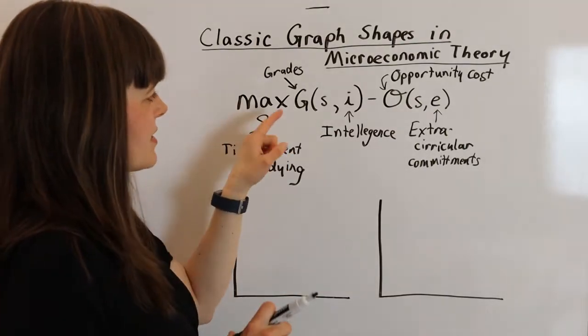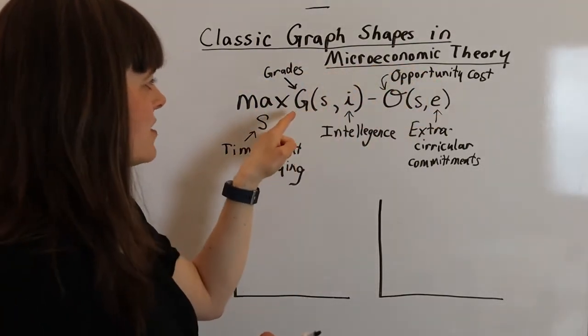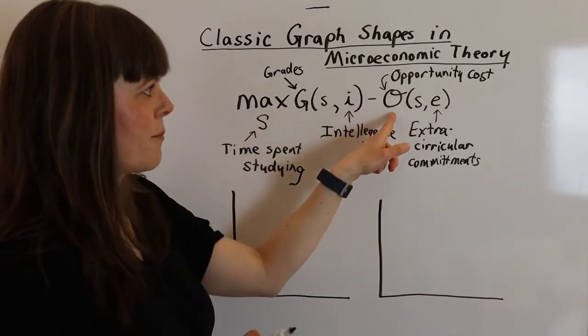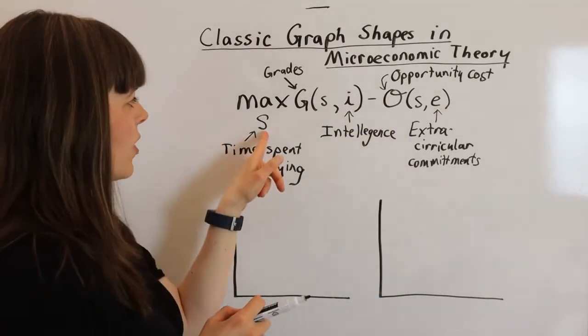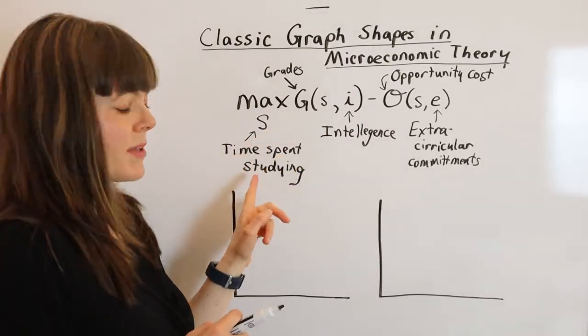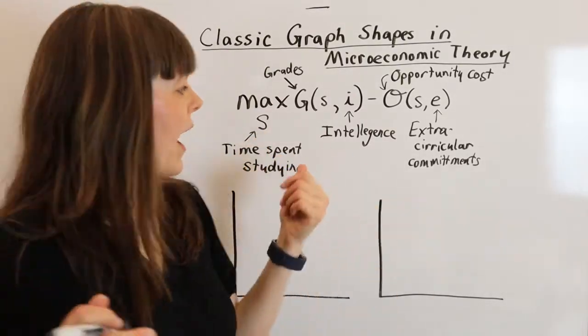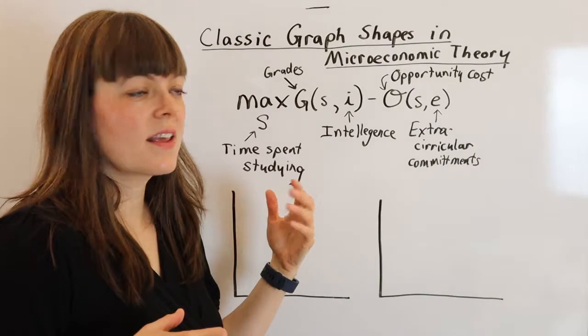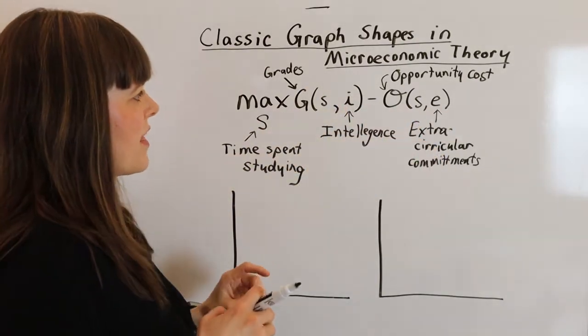It is us. We're maximizing our objective function, which is our grades minus the opportunity cost. What are we modeling? That's going to be our choice. Our choice variable is time spent studying, so we're trying to figure out how much time will someone spend studying, what are going to be the forces influencing that.